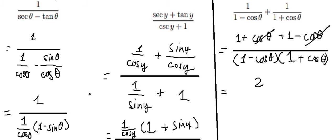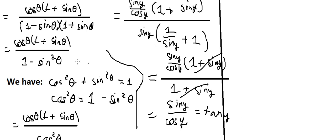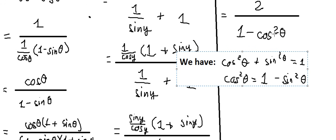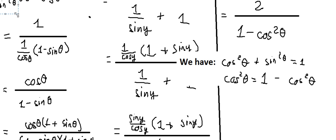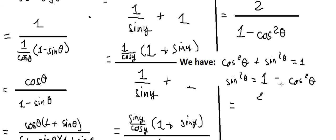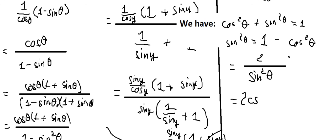One minus cosine theta multiplied by one plus cosine theta gives one minus cosine squared theta. Applying the same Pythagorean identity as before, one minus cosine squared theta equals sine squared theta. We substitute this in, and then we get two over sine squared theta, which can be written as two cosecant squared theta. That is the final answer.